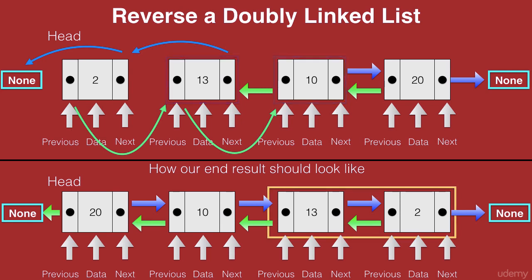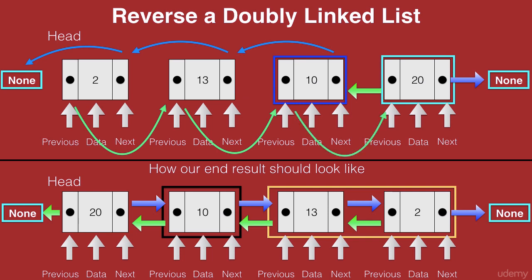Now let's move on to the node with data 10. In the reversed list, the next of 10 points to 13 and the previous of 10 points to 20. Let's swap the pointers in our existing list: we remove the connection from 10 to 20 and establish it as the previous of 10, then remove the previous connection and establish it as the next of 10. Now the previous of 10 points to 20 and the next of 10 points to 13.